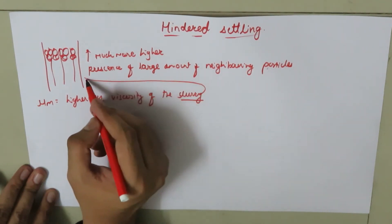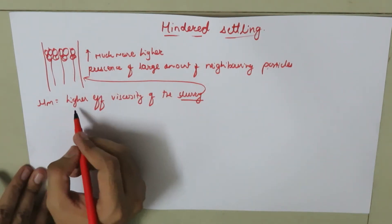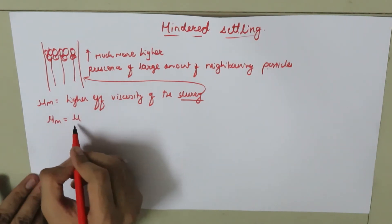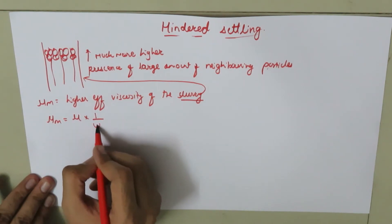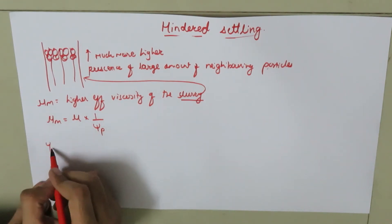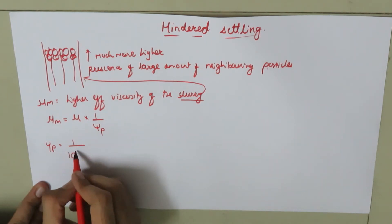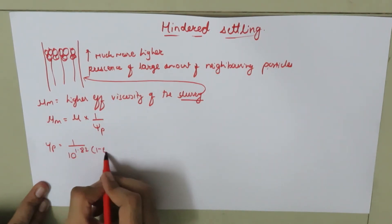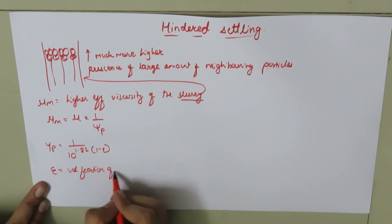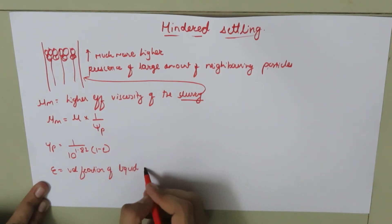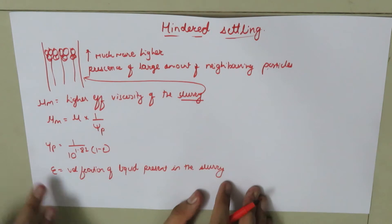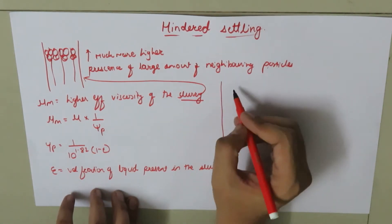If mu_medium is the higher effective viscosity of the slurry, then mu_medium is equal to the viscosity of the fluid times one upon the empirical correction factor psi_P. This empirical correction factor psi_P is equal to 1 upon 10 to the power 1.82 times (1 minus epsilon), where epsilon is the volume fraction of liquid present in the slurry.